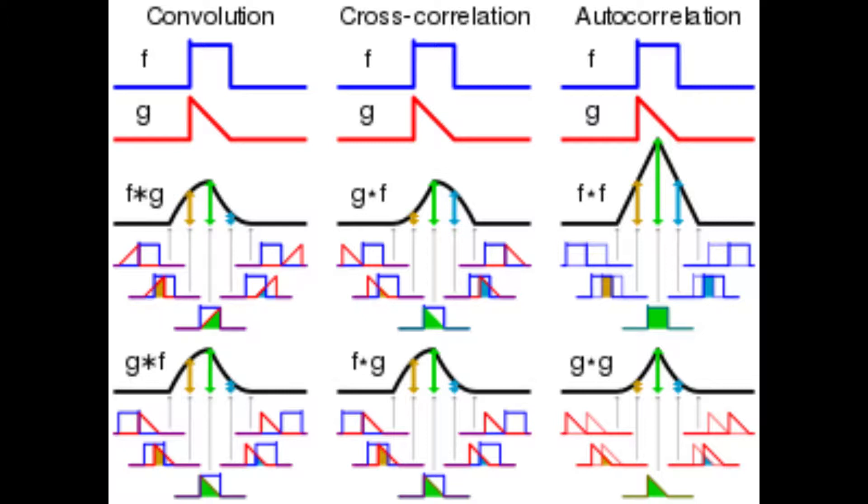In a pulse beam autocorrelator, the two functions are pulses from the same laser, which we assume to be equivalent.